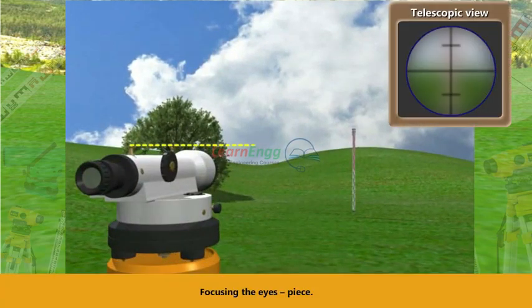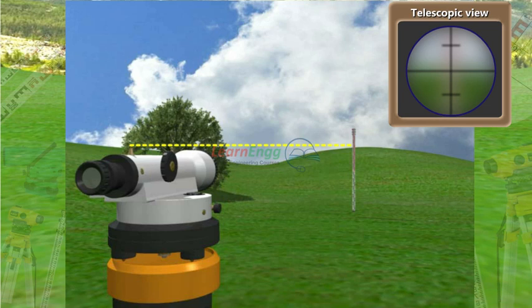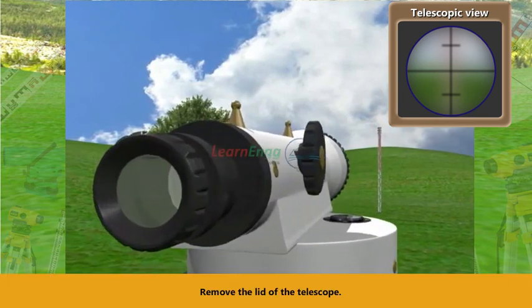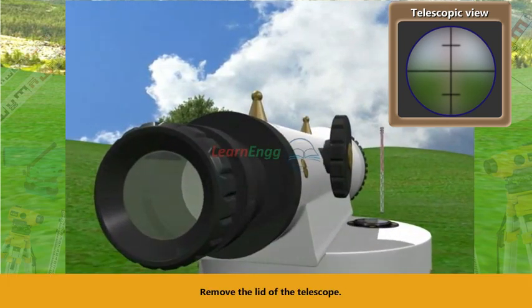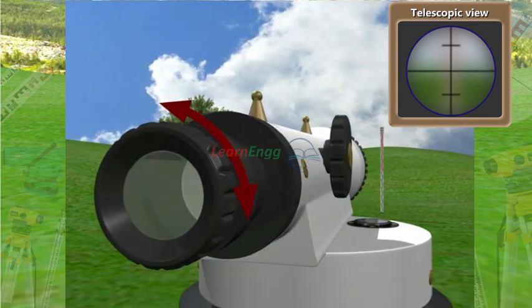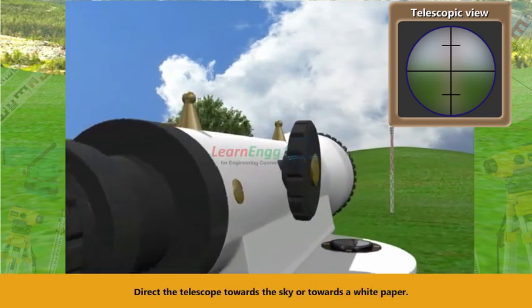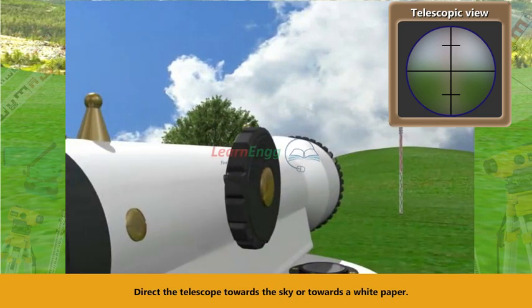Focusing the eyepiece. Remove the lid of the telescope. Direct the telescope towards the sky or towards a white paper.